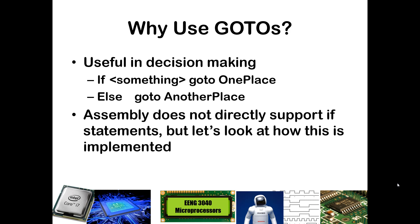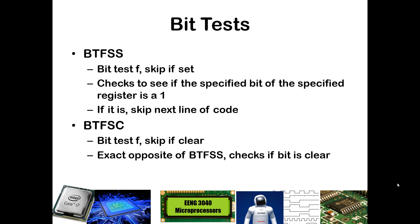Go-tos are important because they can be used in decision making. If some condition is true, you want to go to one place; otherwise go to another place. You can label the code to execute when something is true. However, assembly does not directly support if logic and else logic like this — we have to do a roundabout approach. We need to look at bit tests, which will be two more commands in assembly, followed by the next video which introduces how to do if statements within assembly.